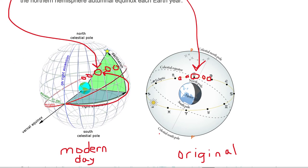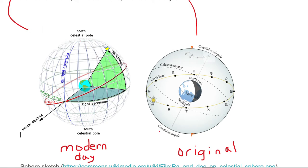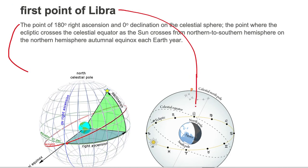Now why do we have a modern day celestial sphere on the left and an original sphere on the right? That's because the first point of Libra and the first point of Aries are not always going to be in Libra and Aries. When they were originally assigned, the crossing occurred when the sun was in the constellation of Aries — hence this was called the first point of Aries for the first day of spring. And 180 degrees later on the other side, when they crossed it was the first day of fall and the sun was in the constellation of Libra — hence this was called the first point of Libra.